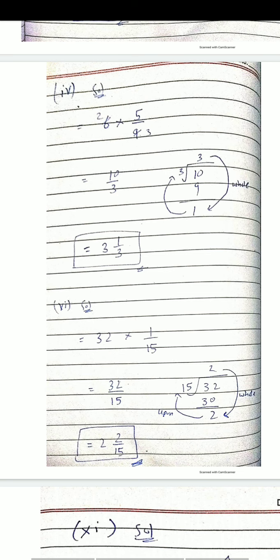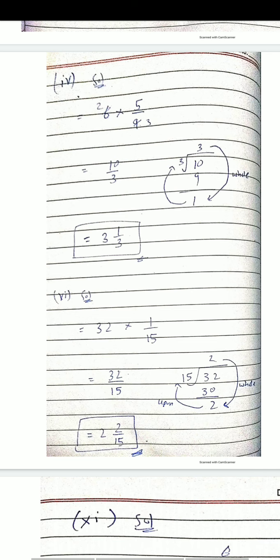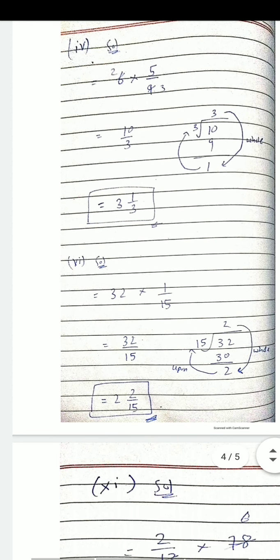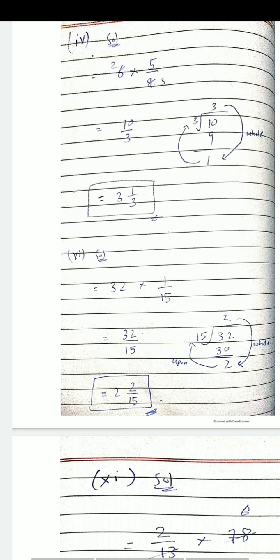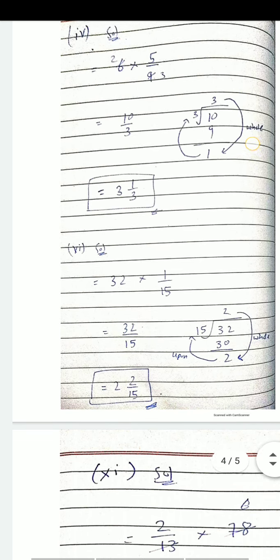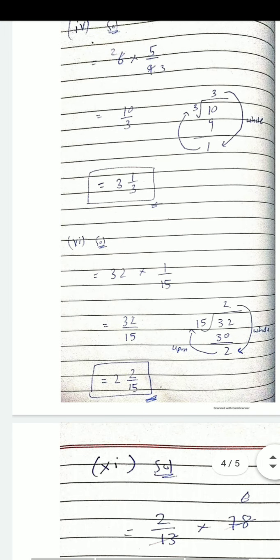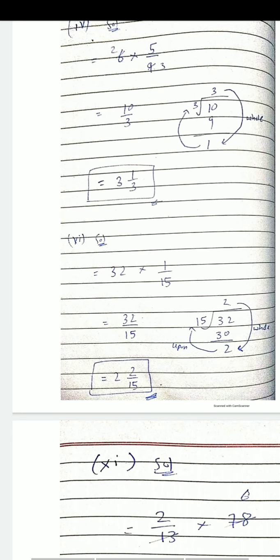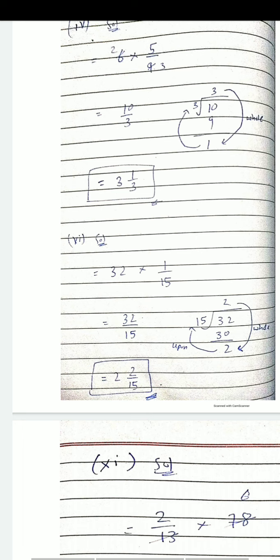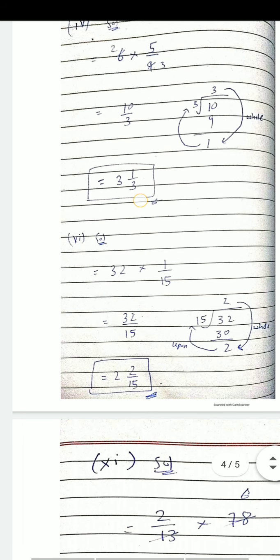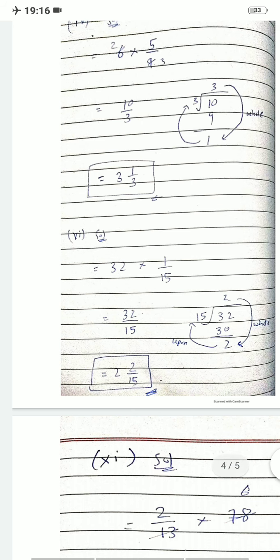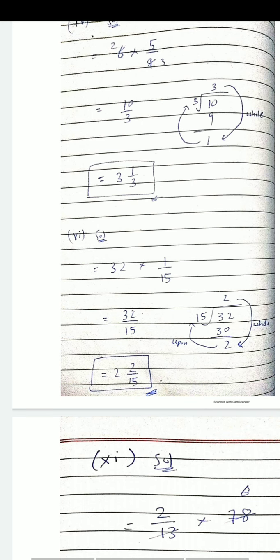Improper fraction کو mixed number والی form میں convert کرنا ہے۔ 10 divide by 3: 3×3=9، 10 میں سے 9 جائے گا، remainder 1 بچتا ہے۔ تو answer ہے 3 whole number 1/3۔ یاد رکھیں کہ denominator کبھی change نہیں ہوتا، ہمیشہ numerator change ہوتا ہے — denominator وہی رہنے دیں۔